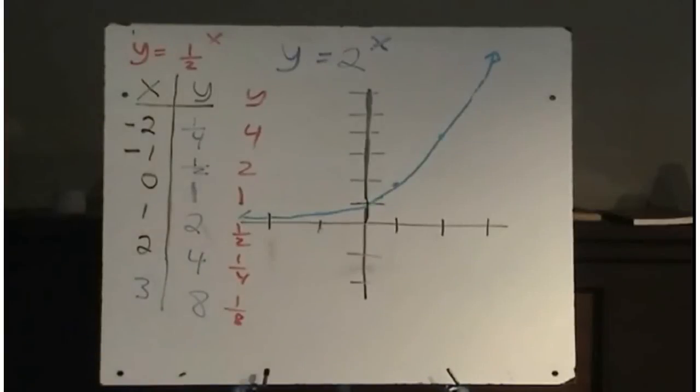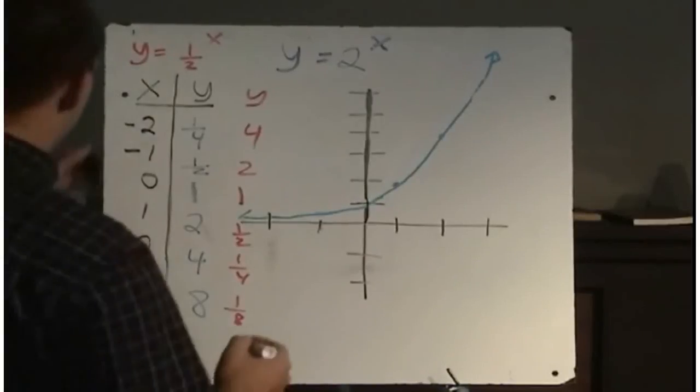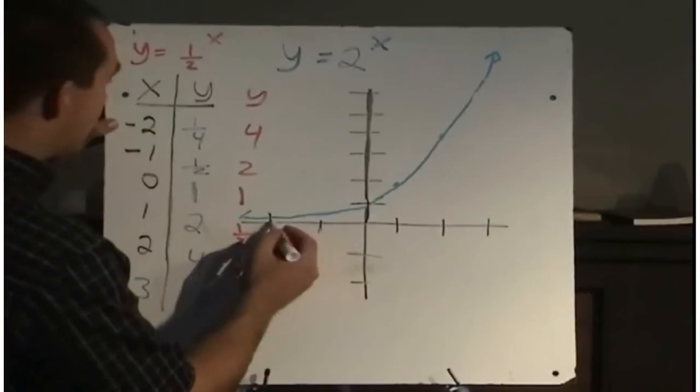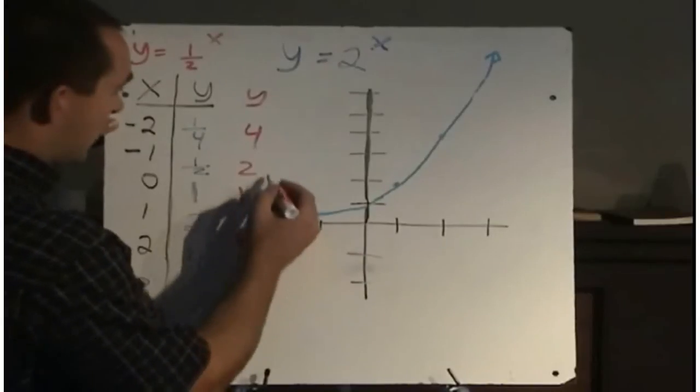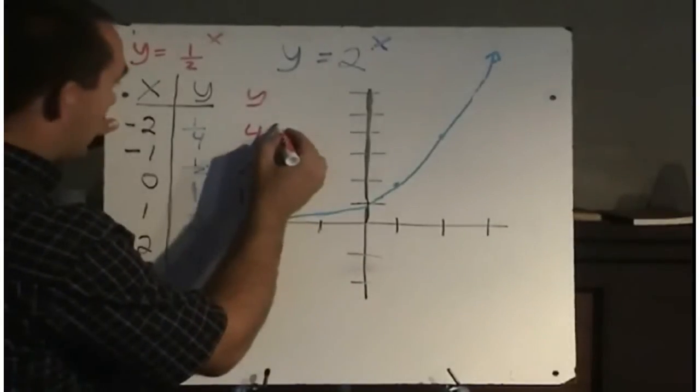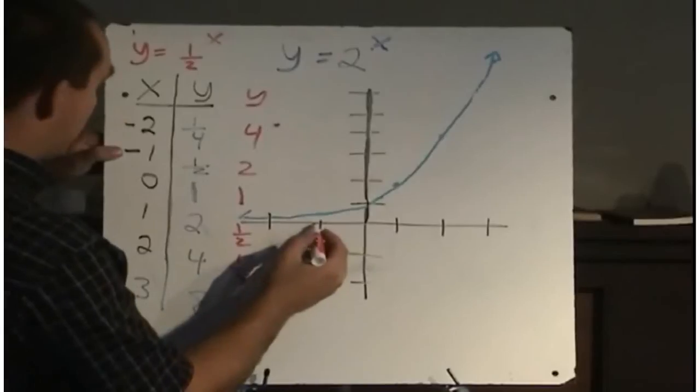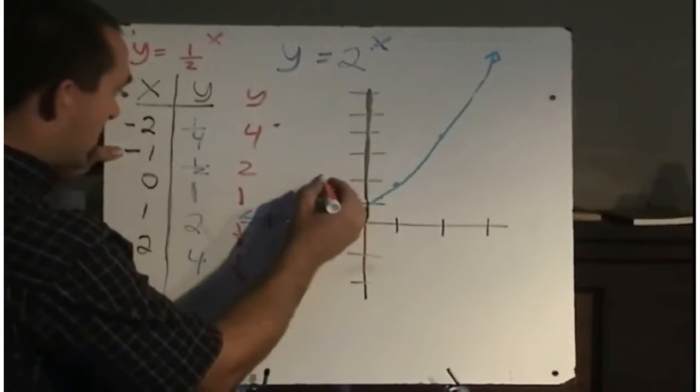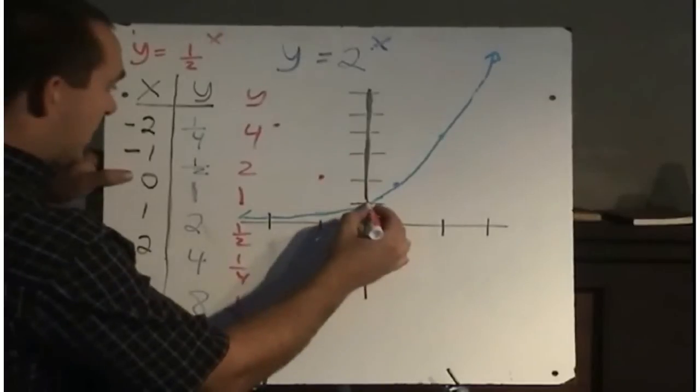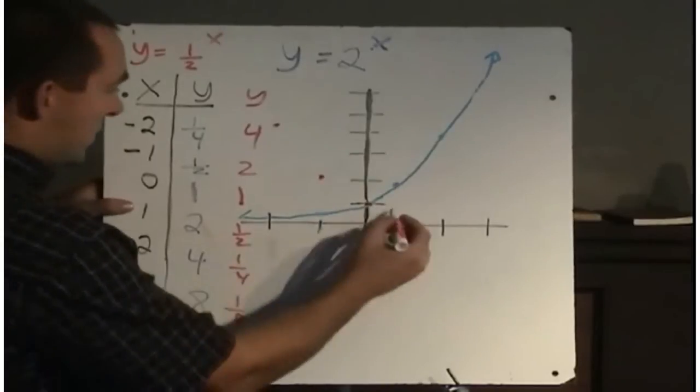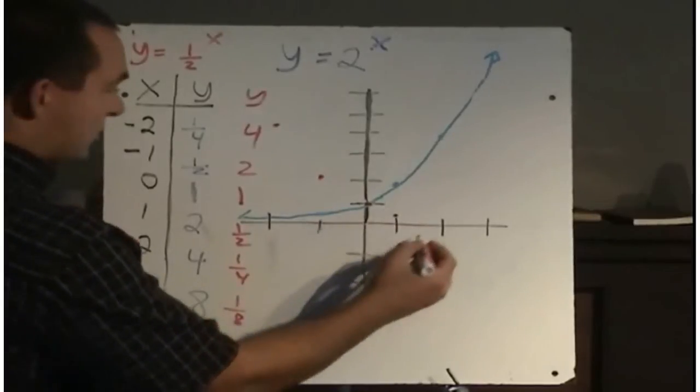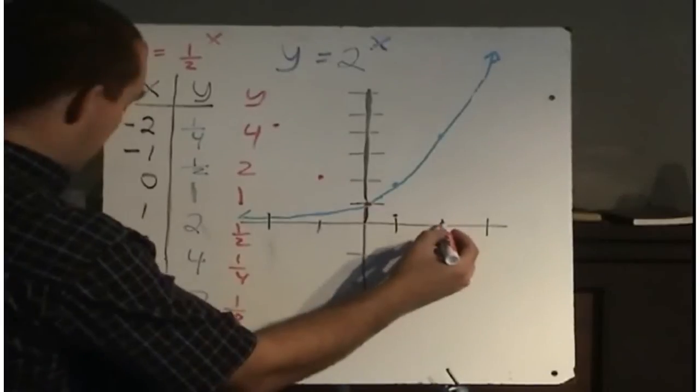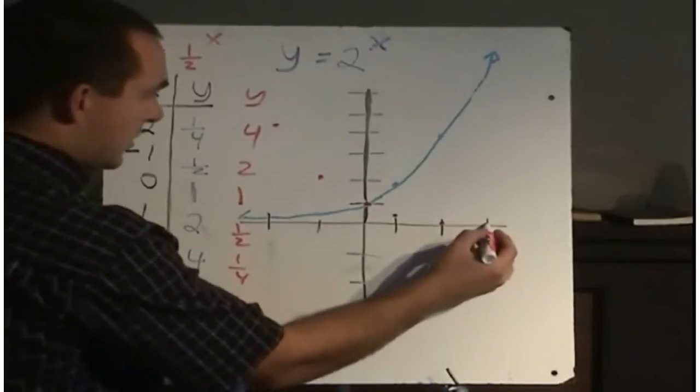So let us plot these points and see what our graph looks like. When x is negative 2, y value is 4. x is negative 1, y value is 2. x is 0, y is 1. x is 1, y is 1 half. x is 2, y is 1 quarter. x is 3, y is 1 eighth.